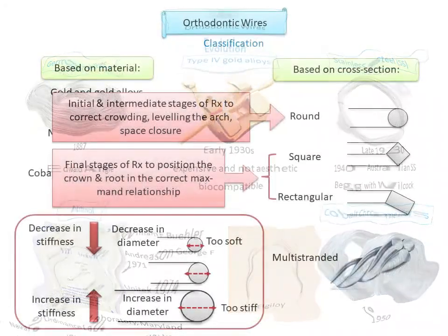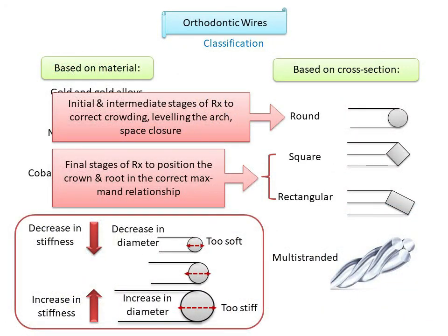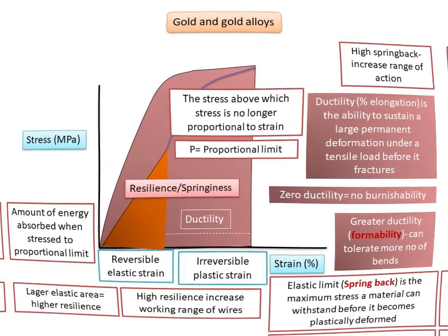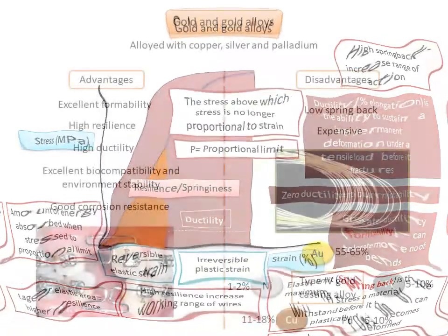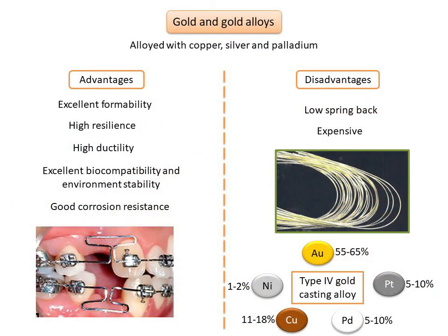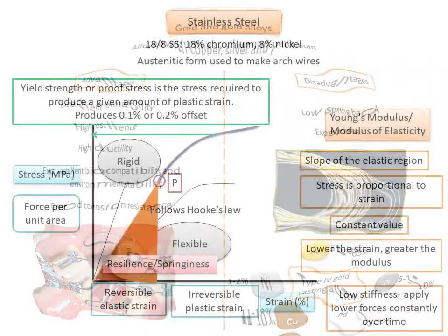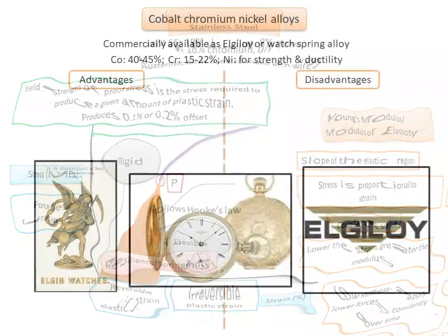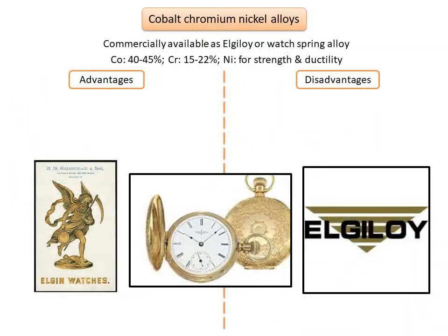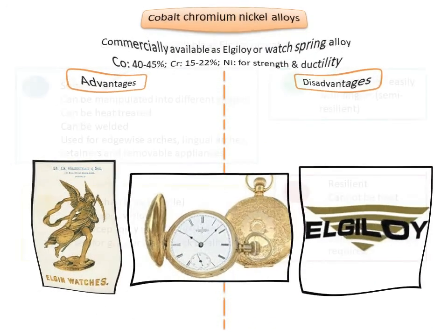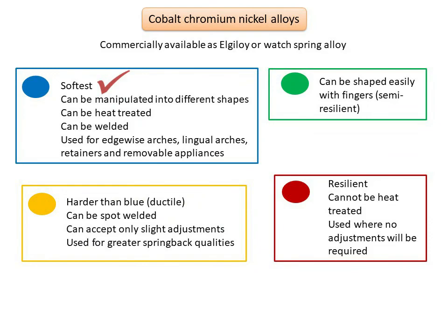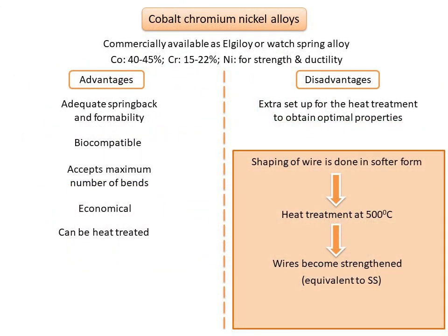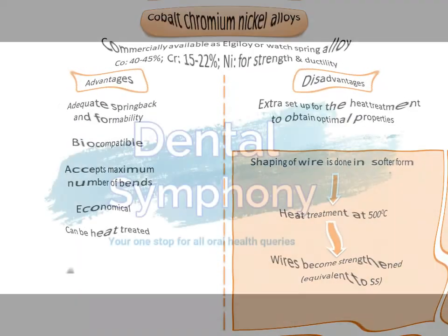This concludes the discussion of gold, stainless steel, and cobalt-chromium arch wires. In the second part of this presentation, we will discuss the newer advancements in orthodontic arch wires — nickel-titanium and beta-titanium alloys — as well as Optiflex and multi-stranded arch wires. Stay tuned for the next video. Thank you.